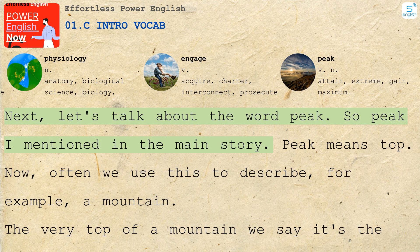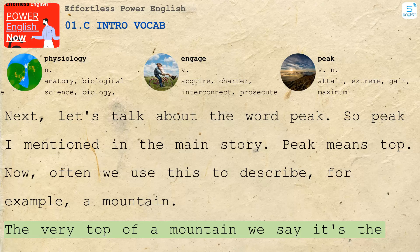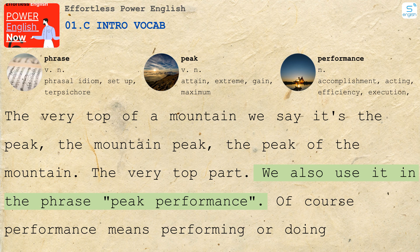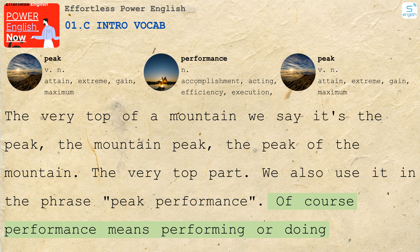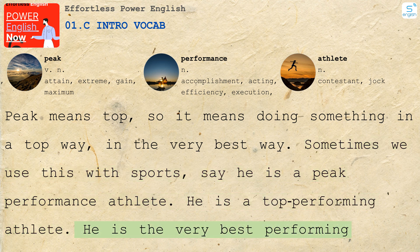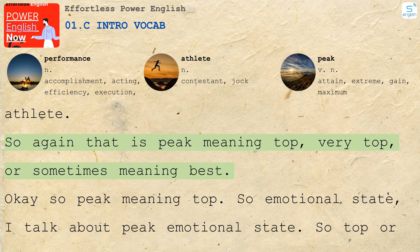Next, let's talk about the word peak. Peak — I mentioned it in the main story. Peak means top. Often we use this to describe, for example, a mountain. The very top of a mountain — we say it's the peak, the mountain peak. We also use it in the phrase peak performance. Performance means performing or doing something. Peak means top, so it means doing something in a top way, in the very best way. Sometimes we use this with sports — he is a peak performance athlete, he is the very best performing athlete. So peak means top, or sometimes best.